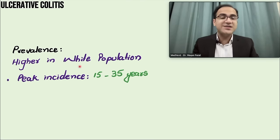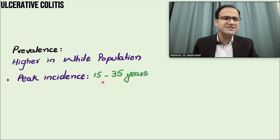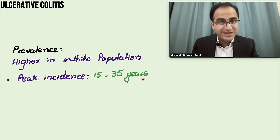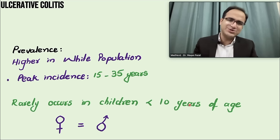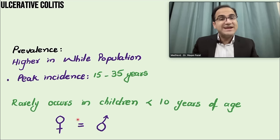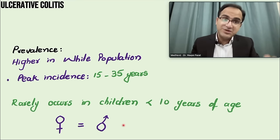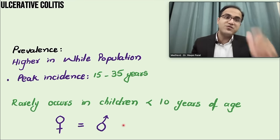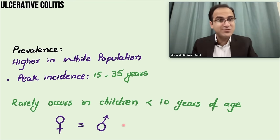Regarding prevalence, ulcerative colitis is higher in the white population, with a peak incidence in 15 to 35 years of age. It rarely occurs in children less than 10 years of age. It affects males and females equally, and another peak is also seen in patients after 50 years of age.